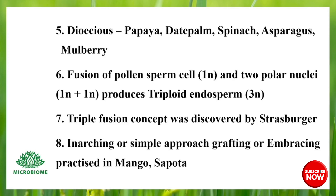Next, dioecious plants include papaya, date palm, spinach, asparagus, and mulberry. Fusion of pollen sperm cell (1N) and two polar nuclei (1N + 1N) produces triploid endosperm (3N). This triple fusion concept was discovered by Strasburger.